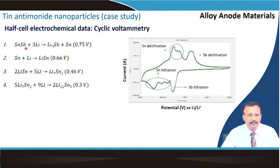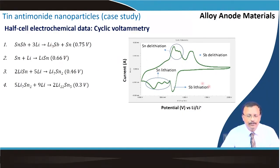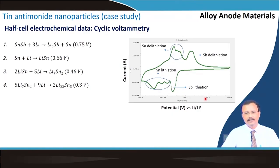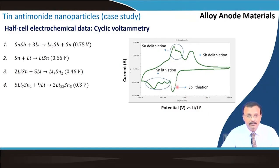These reactions can be identified by the typical voltage from the cyclic voltammetric curve. There are several reduction reactions and several alloying reactions taking place. Oxidation means lithium is going out of the structure (positive current), and reduction means lithium is coming in. The alloying (lithiation) part and the delithiation part can both be clearly identified, and you get peaks at specific voltages.